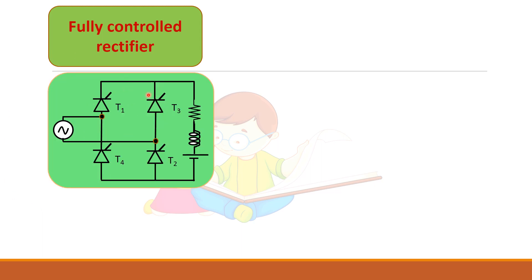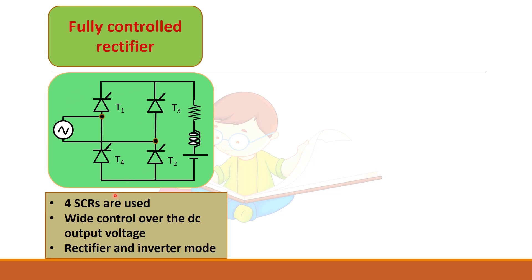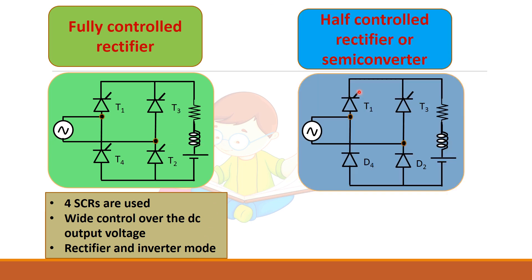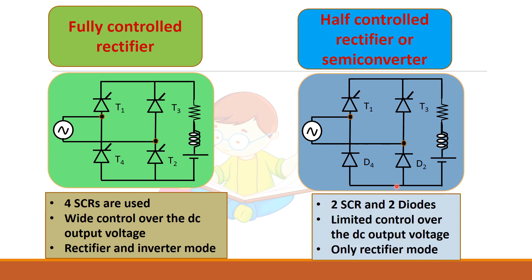In fully control rectifier all the four devices are SCRs so you are able to control the rectifier fully and its output voltage changes from plus value to minus value. You can operate in both rectifier mode and inversion mode but in case of a half control rectifier first thing you can see that two diodes are used instead of thyristors. So there is a limited control over the output voltage.